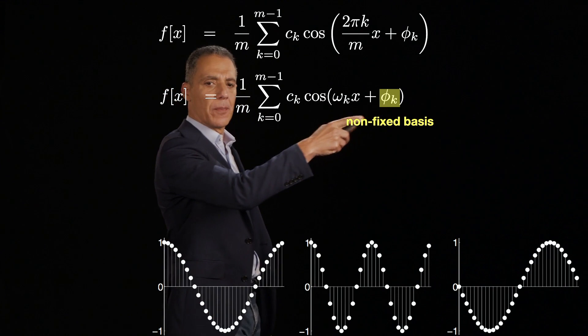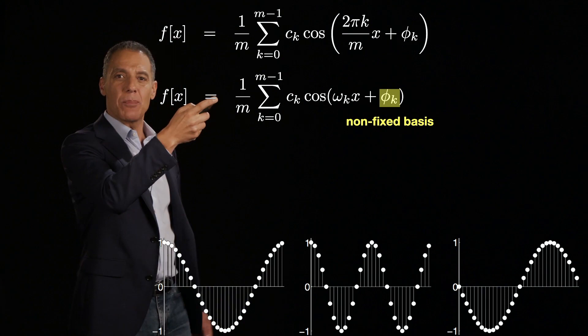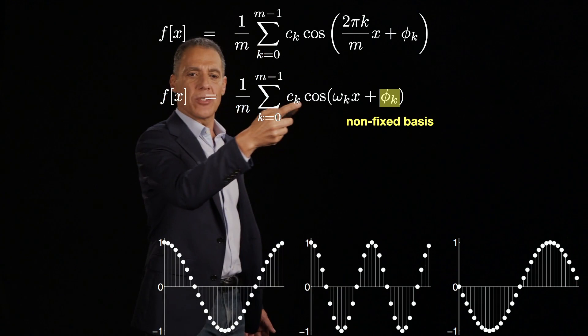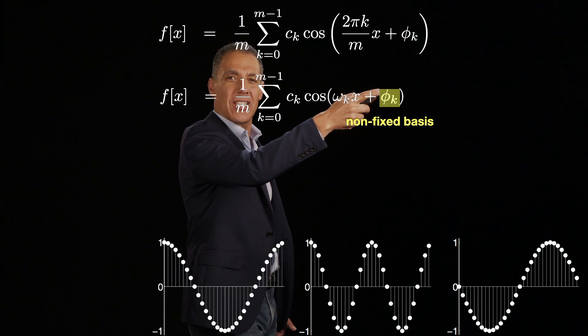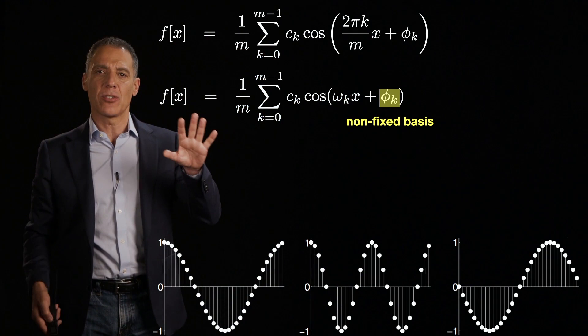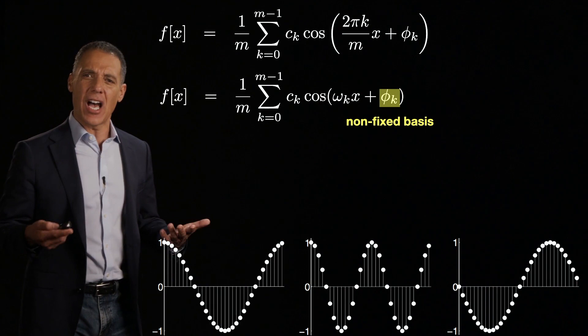But notice something a little weird here in terms of this phase term. That phase term is indexed on k, which means that it is changing each time, and it's going to depend on the signal. Which means that I'm going to represent some signal, and then the basis I'm choosing to represent it with is going to find to change the amplitudes. That's outside the basis, that's the scalar. This isn't changing, the frequency is not changing, those are fixed. But this thing is going to depend on the underlying signal, which means if I use this basis representation in terms of the cosine functions, every signal is going to have a different basis.